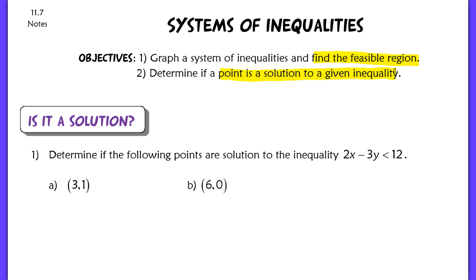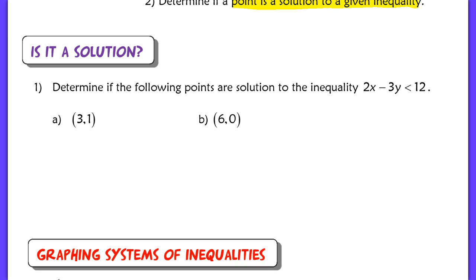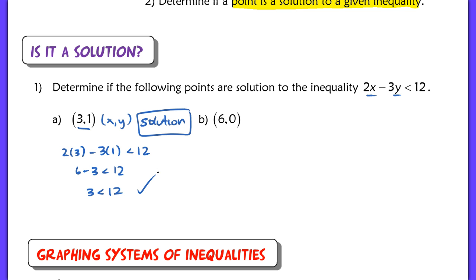When you're asked to decide if a point is a solution to your inequality, you simply plug in your coordinates — the x, y value — for the x and y that appear within the inequality. So here I would have 2 times 3 minus 3 times 1, and I want to check to see if this is less than 12. 6 minus 3 is less than 12, so this is a solution. Because this is a true statement, this would be a solution.